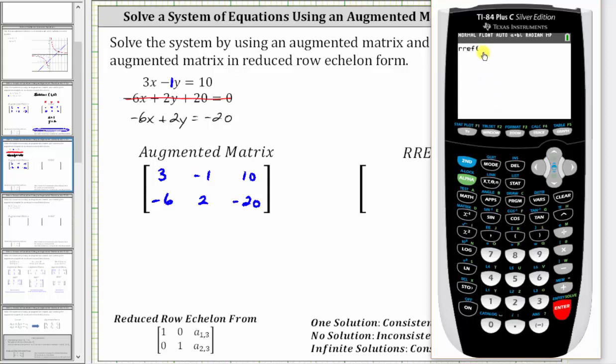And now we need to select matrix A by going back to the matrix menu. Second, x to the power of negative 1, matrix A is already selected. We press enter, right parenthesis, and enter.